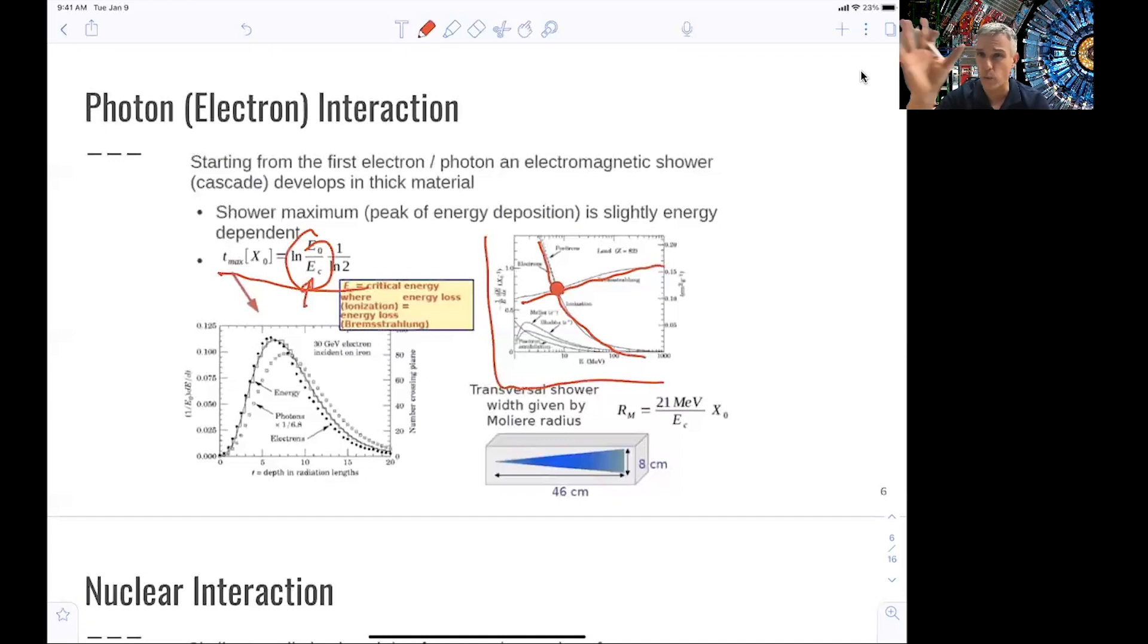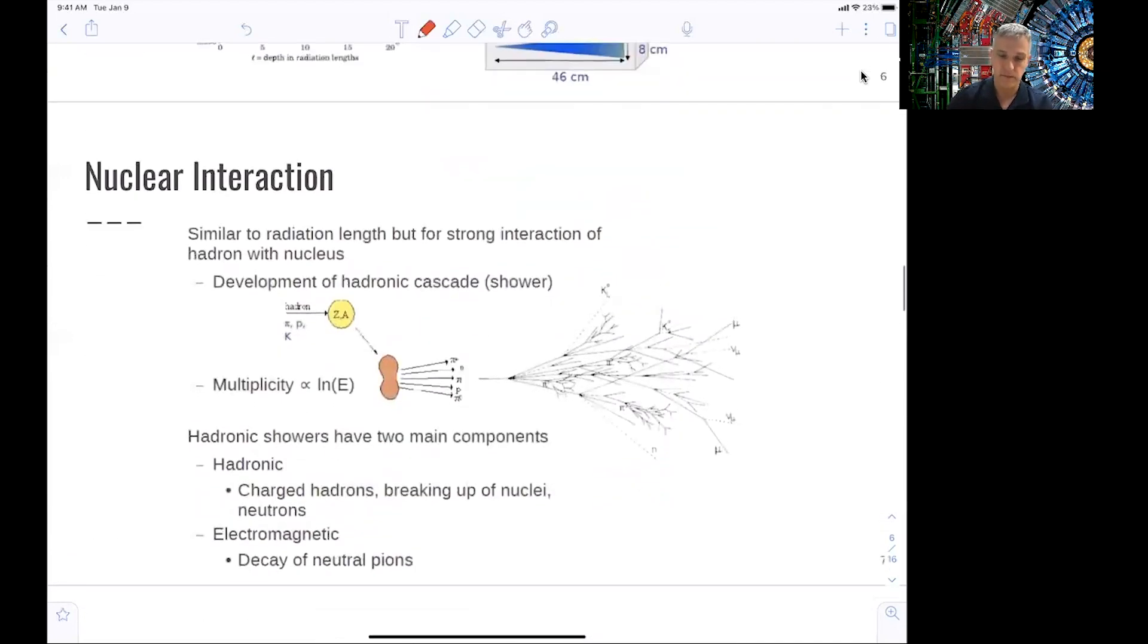You can also wonder how wide a shower actually becomes. This is given by the transverse width of the shower, which is given by the Moliere radius. And that's approximately 21 MeV over the critical energy times the radiation length gives you the size of the transverse size of your shower. And in this example, this is 8 centimeters compared to the shower length of 46 centimeters. This is a very quick summary of electromagnetic showers.